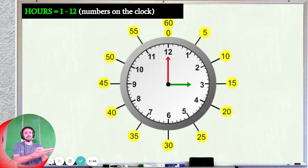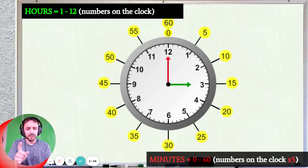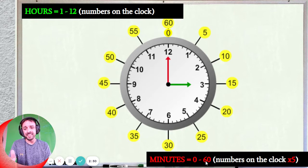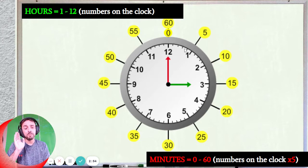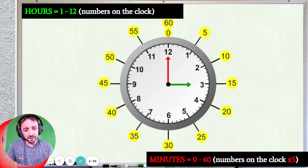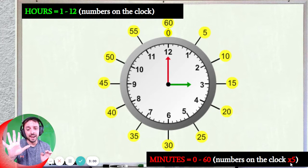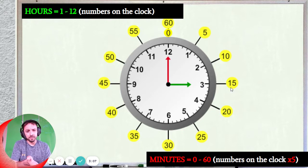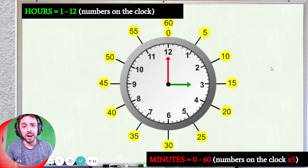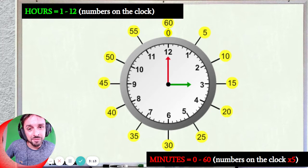What else do we need? We need your minutes. There are 60 minutes on the clock. An easy way to remember is you just look at the number on the clock and times it by 5. For example, 1 times 5 is 5, 2 times 5 is 10, 3 times 5 is 15, 4 times 5 is 20. You see, it's just your 5 times table, like the start of the lesson.